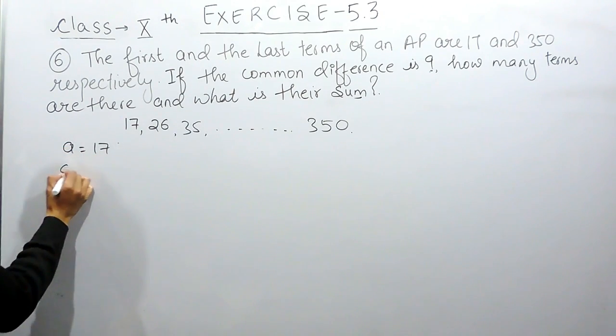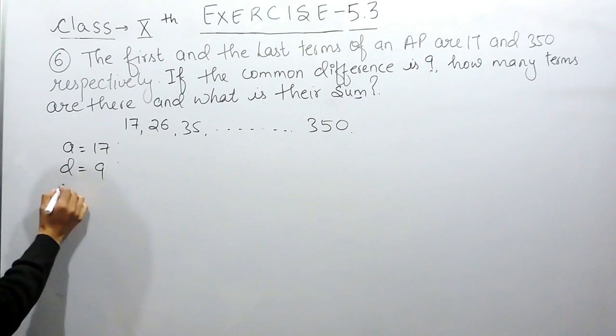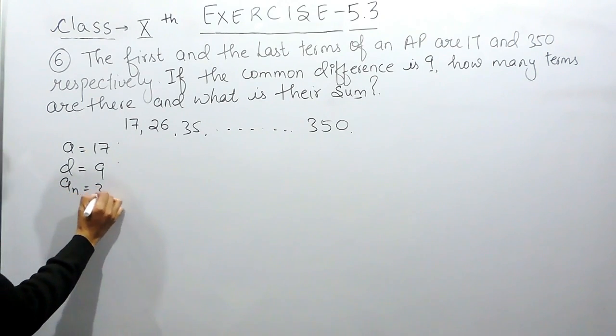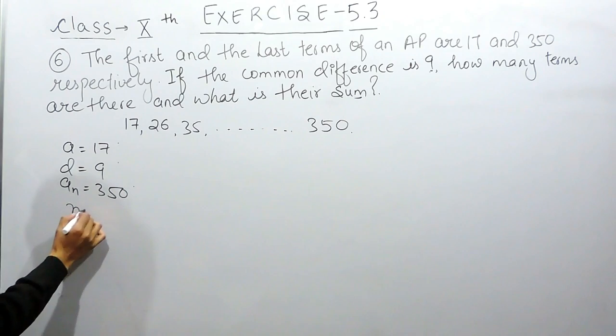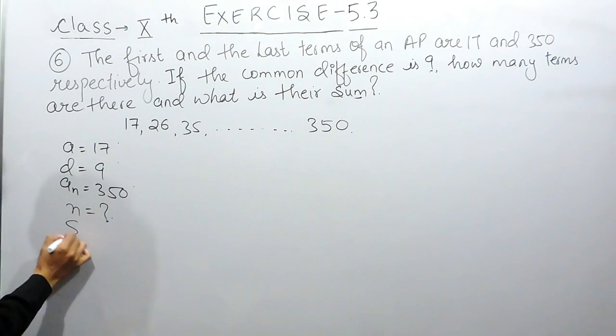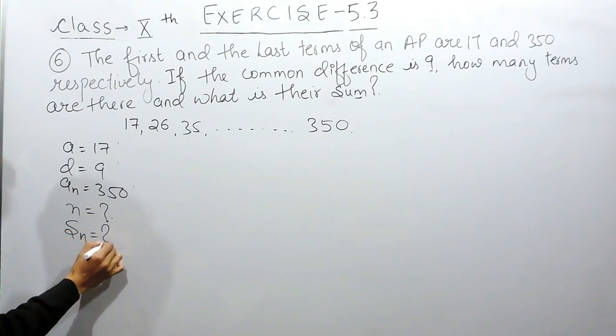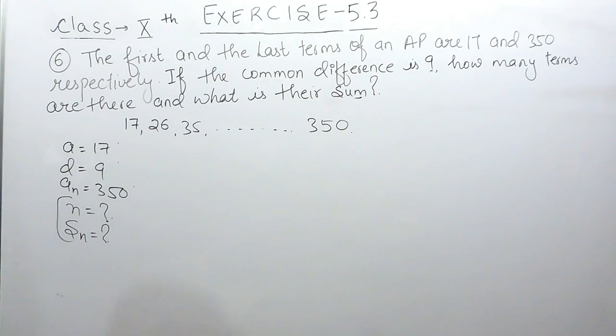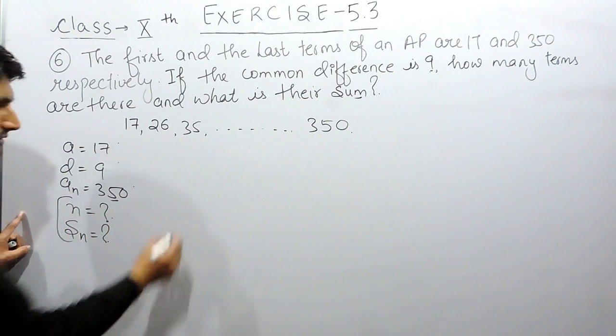The first term is given to us, the common difference is given to us, the last term is given to us which is 350. You have to find the number of terms and the sum of these terms. So these two things we have to find out here, this is the last term is given to us.